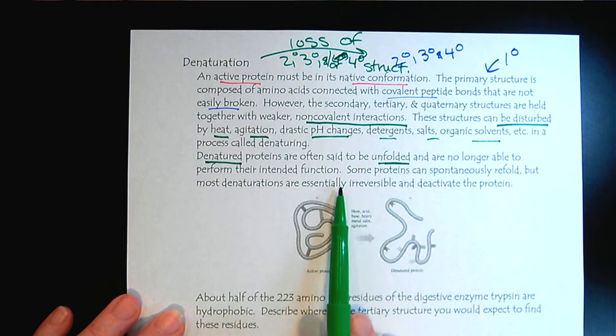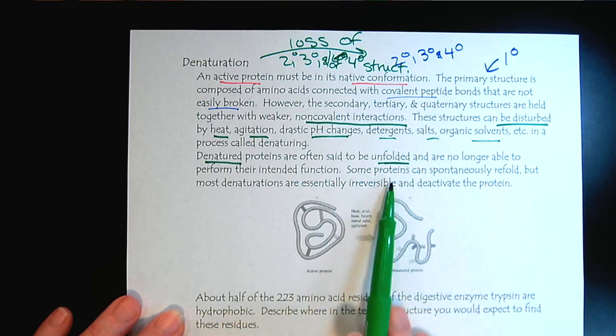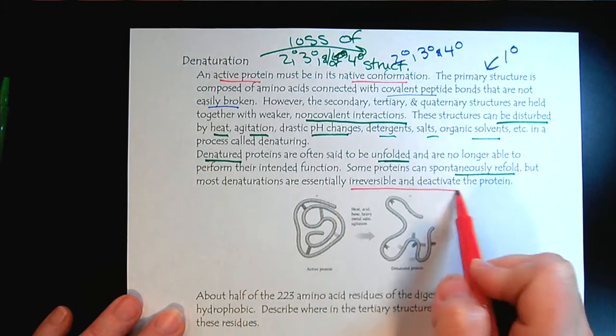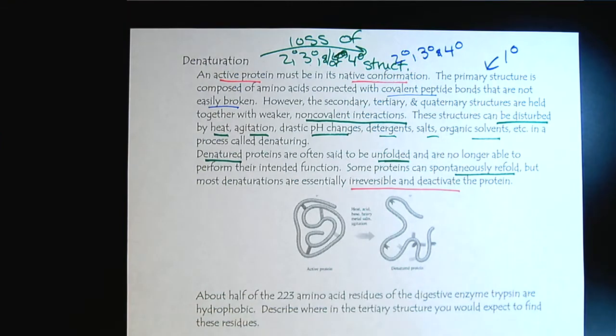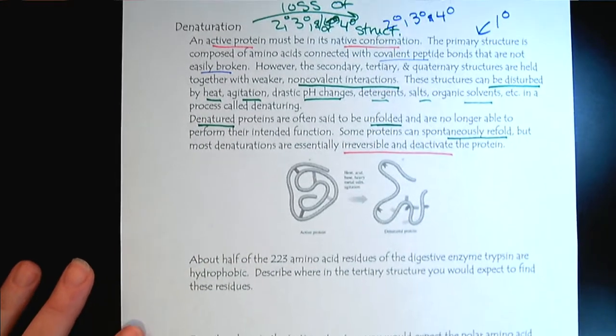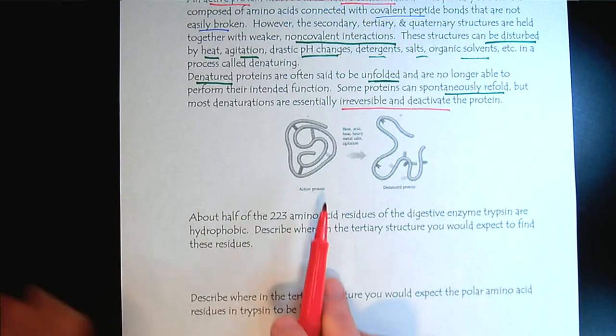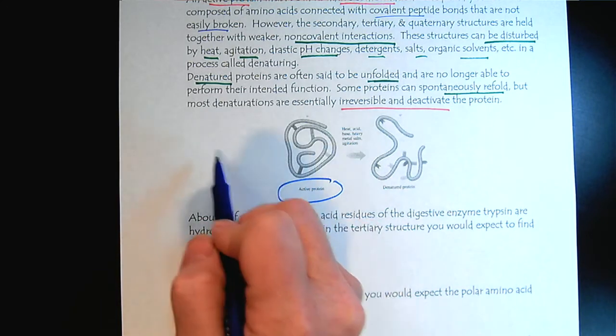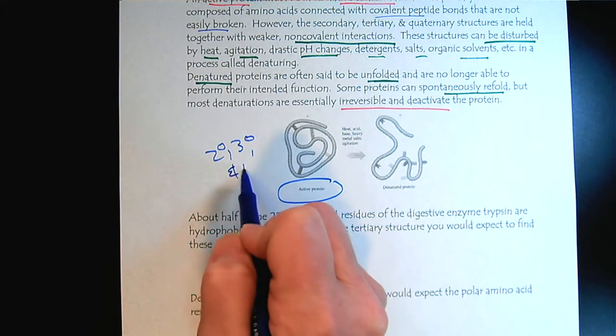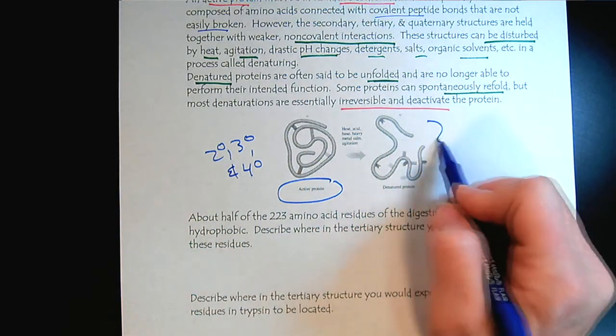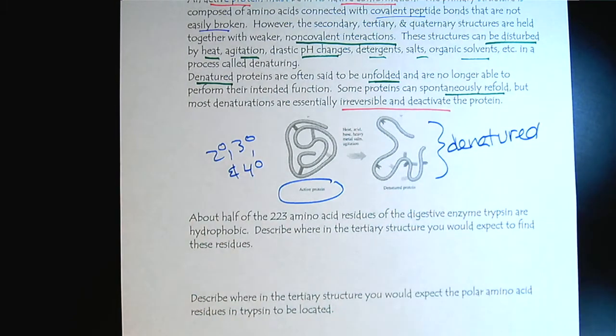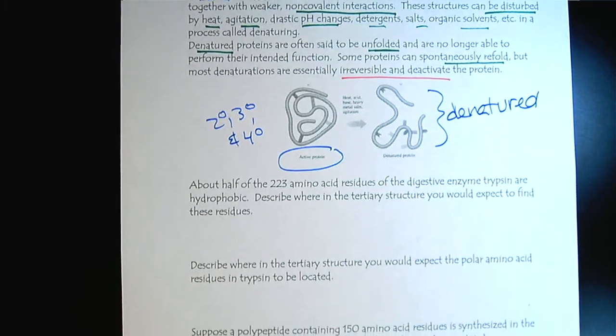It depends on what the circumstances were. Some proteins can spontaneously refold, but in many cases, it's irreversible. And then at that point, the protein is deactivated, and the body needs to just chop it up to use for something fresh. So we think about it here - here is the active protein. Notice that it has its secondary, tertiary, and possibly quaternary structure. And then here we see it as denatured. We've lost those interactions.